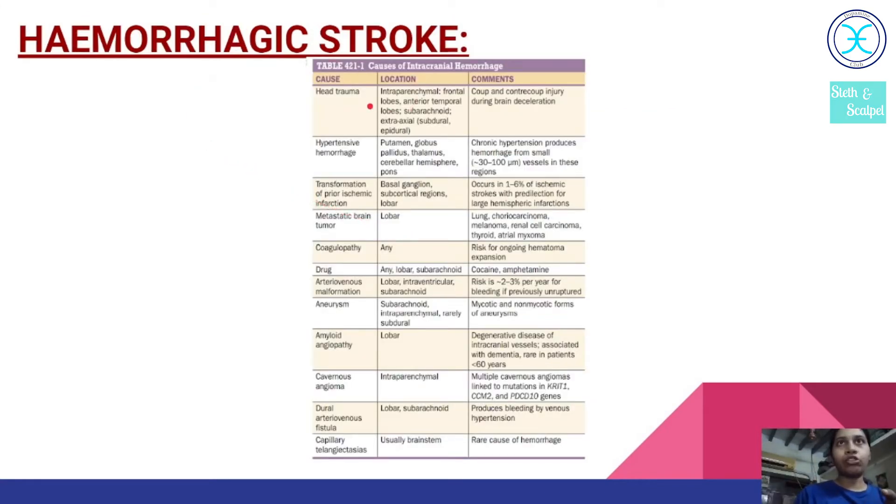Now let us see the hemorrhagic type of stroke. The causes here are any head trauma or hypertensive hemorrhage which is the most common cause, or any pre-existing ischemic infarction or any tumor which causes bleeding on itself, coagulopathy, drugs, aneurysm, AV malformation like that.